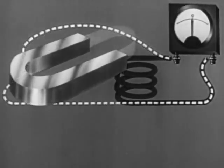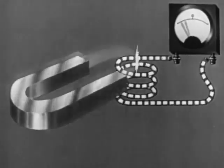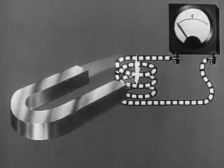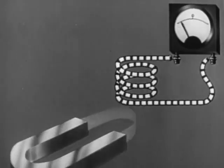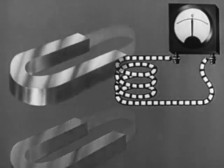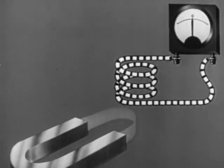Now, coil the wire so that several turns are in the path of the field. Again, the current flow is increased. Stop moving the magnet, current flow stops.